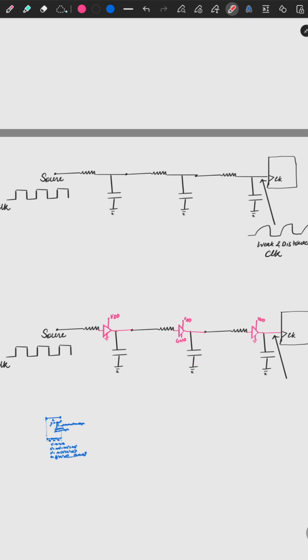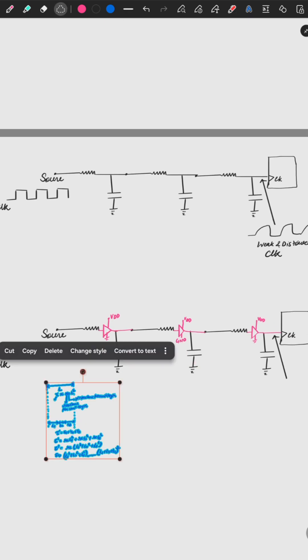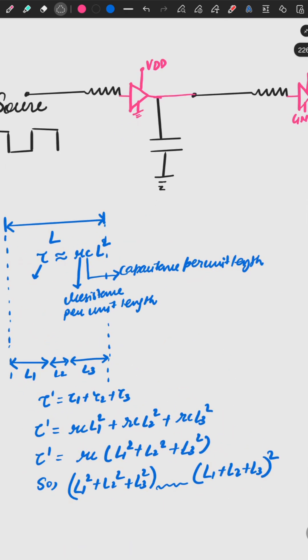Now, how does the buffer help reduce delay? Take a length L. The delay Tau is RC × L², where R is resistance per unit length and C is capacitance per unit length.